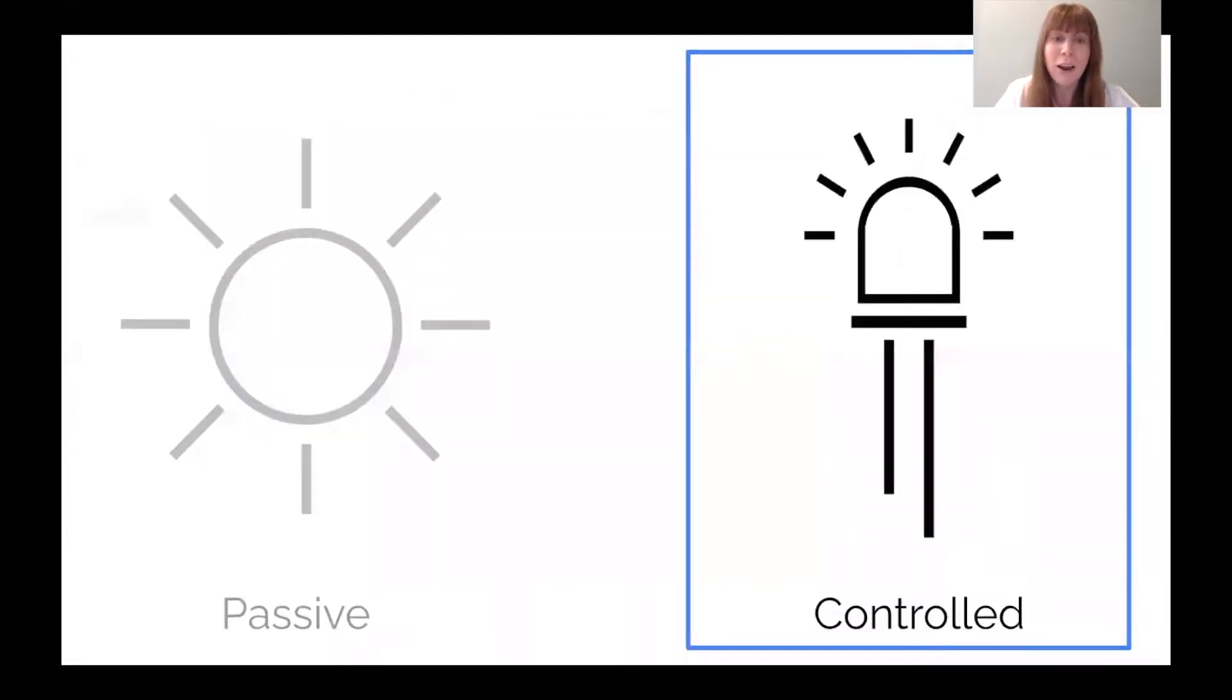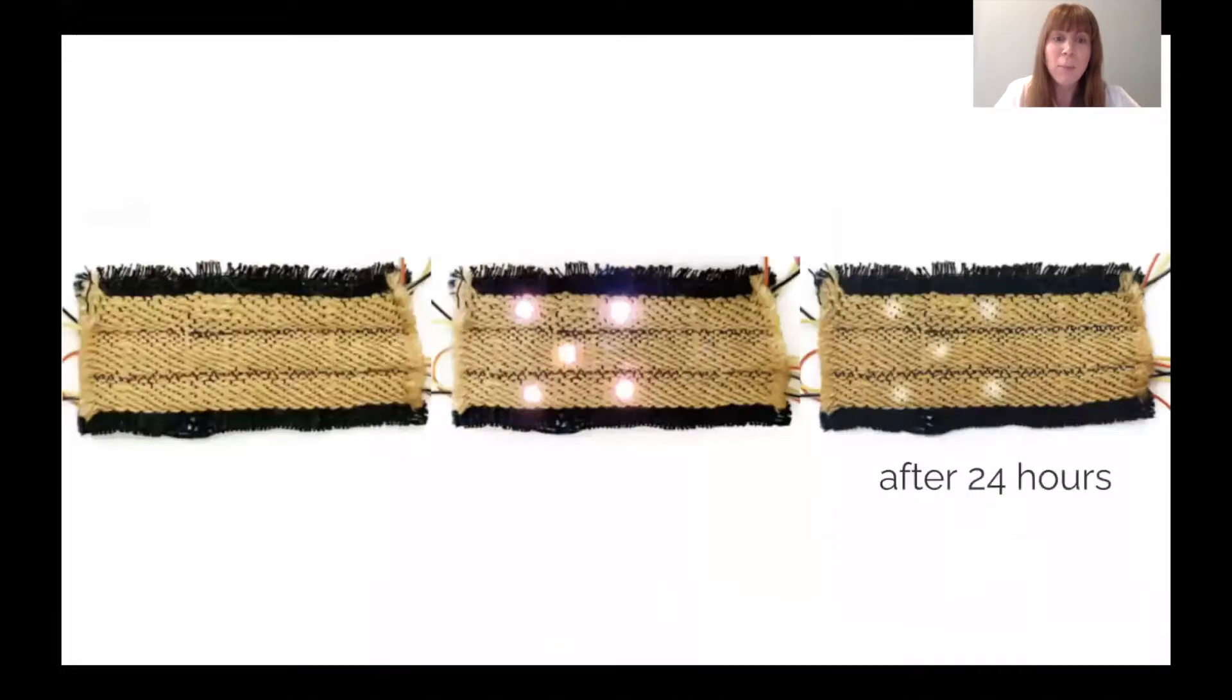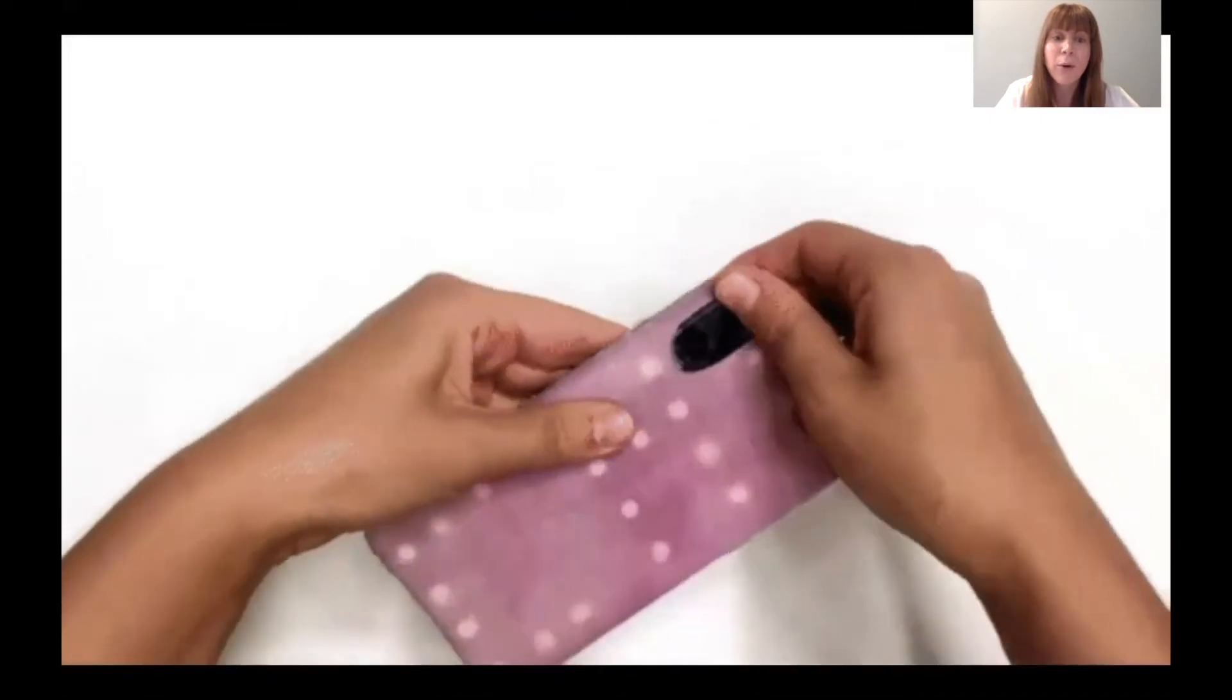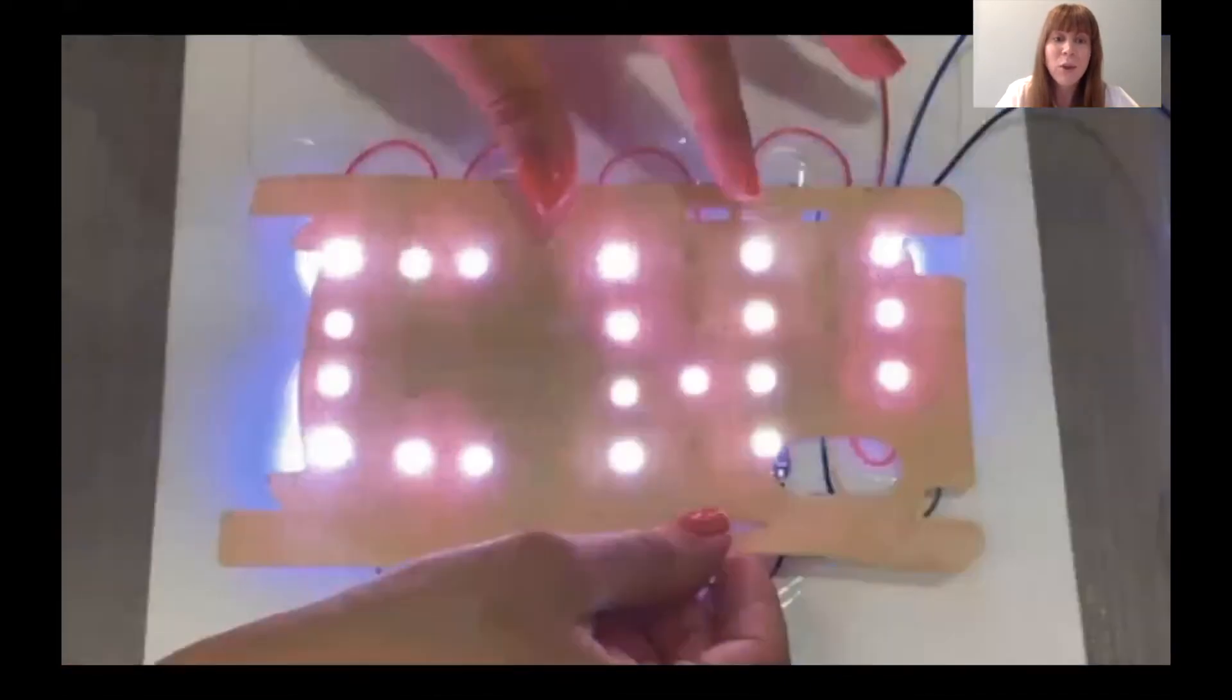For controlled interactions, we experimented with embedding LEDs into a woven swatch. We also created a station where we can place the self-destaining textile on top of a programmed LED matrix. We use this station to pattern a phone case.